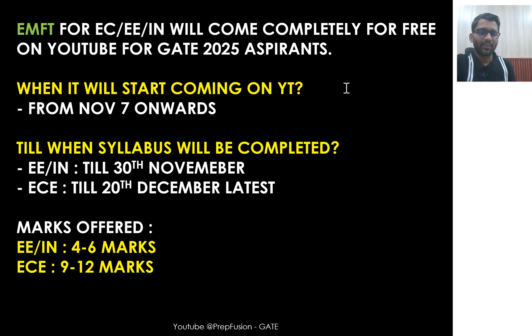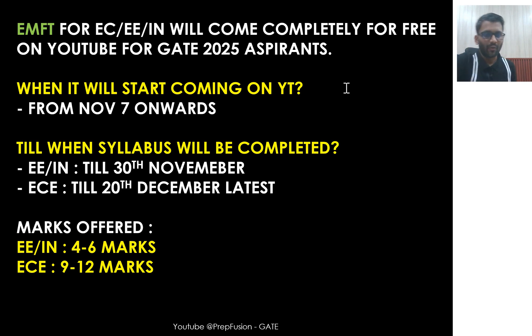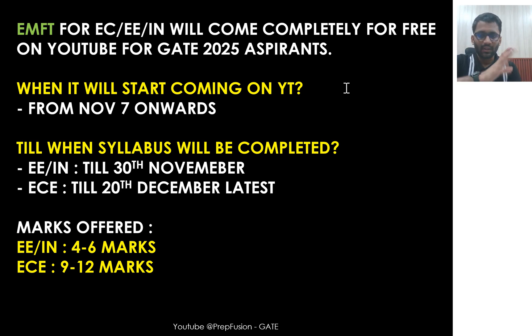For EC students, you can secure 9 to 12 marks in this subject. For Electrical and Instrumentation, it will be worth 4 to 6 marks and the syllabus will be completed by November only. After that, you can complete one more subject — I am specifically telling this for Electrical and Instrumentation students.